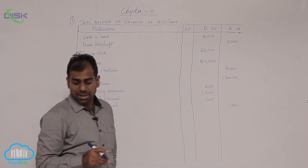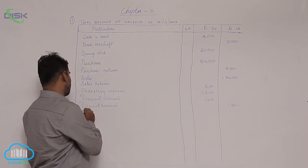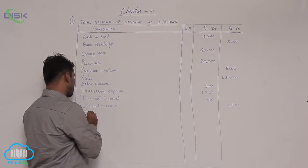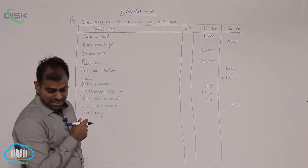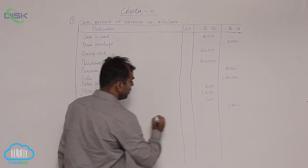Now the next item is machinery. Machinery being real account and an asset, it shows debit balance. So machinery is 24,000.